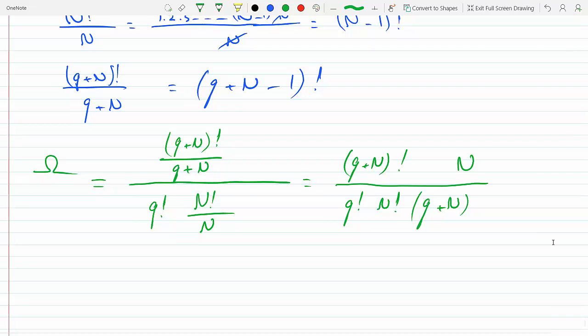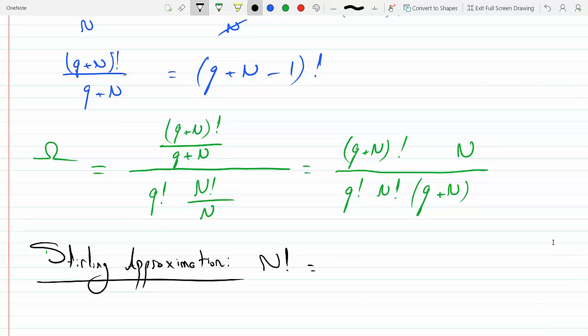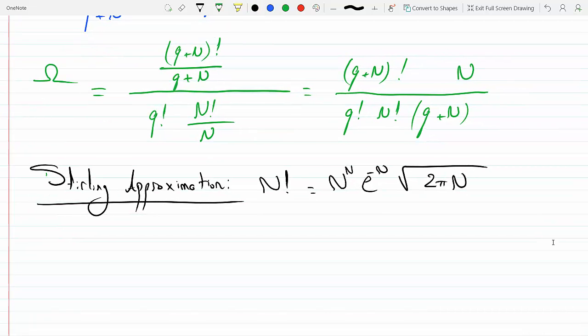Now here I will engage Sterling's approximation. n! is n to the n times e to the minus n times square root of 2πn. This equation is in your book equation 2.14, and I will use this to simplify all the factorial expressions in the multiplicity in the green equation that we wrote.